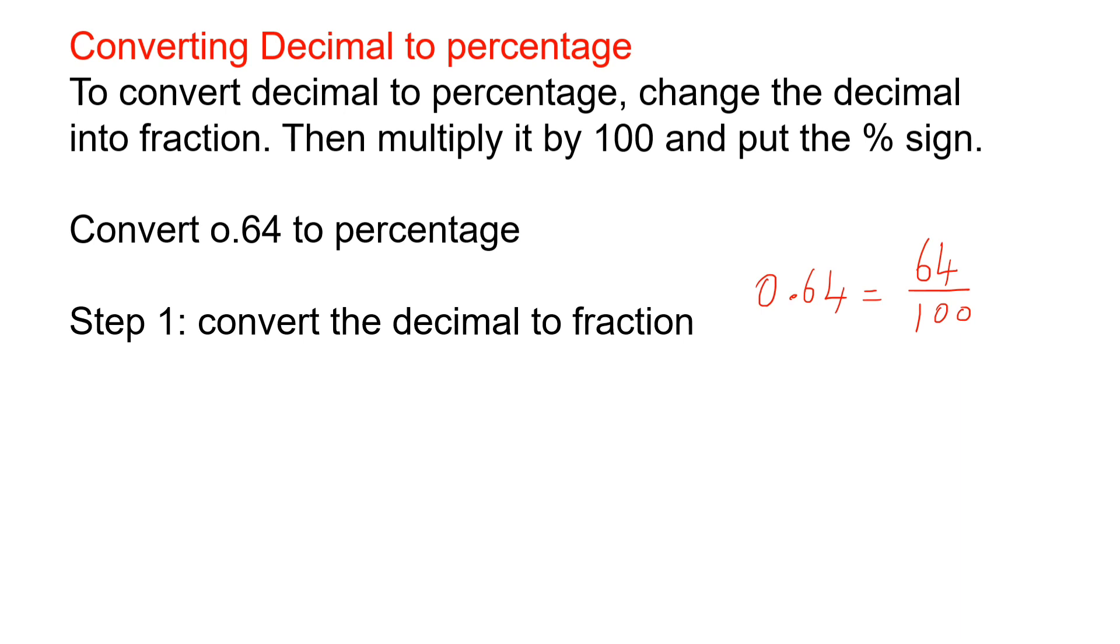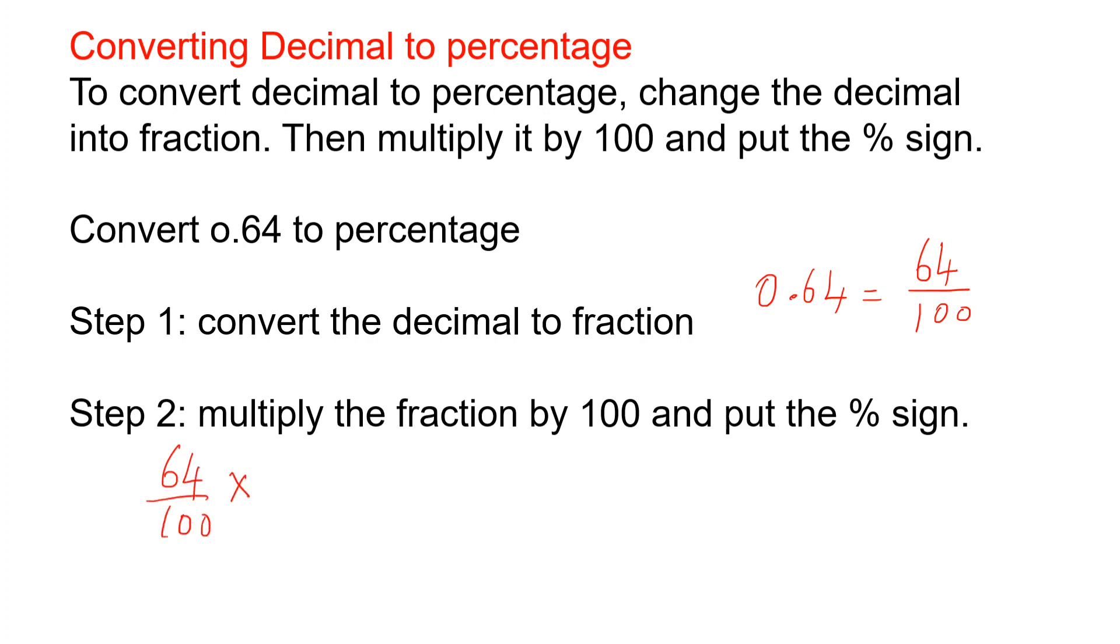Now next step, multiply the fraction by 100 and put the percentage sign. So here we have the fraction as 64 by 100 which has to be multiplied with 100. So here 100, the zeros get cancelled. Then 64 into 1 will be 64 itself.